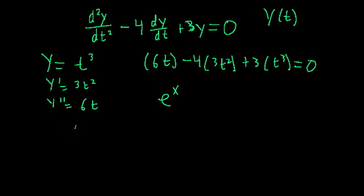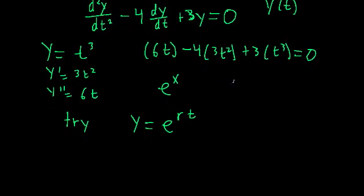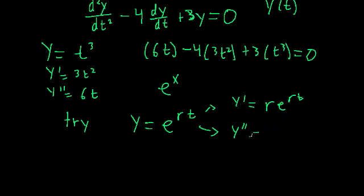We're going to try a test function. Let's say y is equal to e raised to r times t. We don't know what r is — we don't know what exponent will help satisfy this particular differential equation — but by plugging in and checking, we'll hopefully figure out the value of r. The first derivative y prime equals r times e to the rt, and the second derivative y double prime equals r squared times e to the rt.